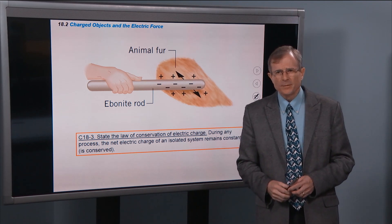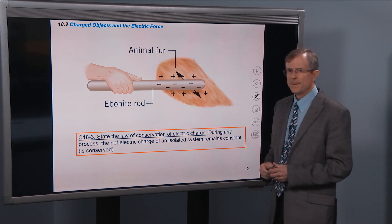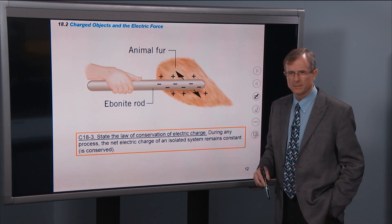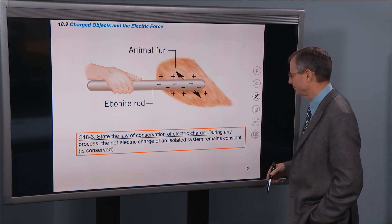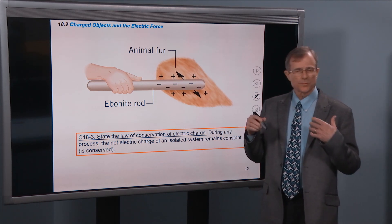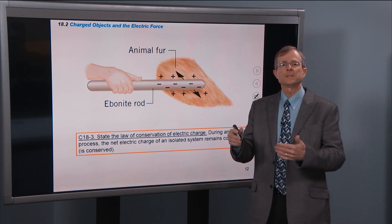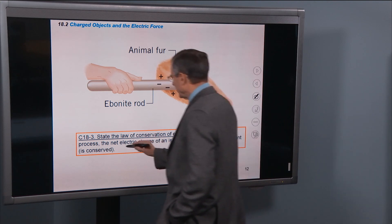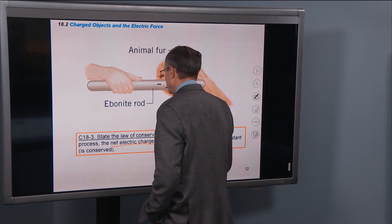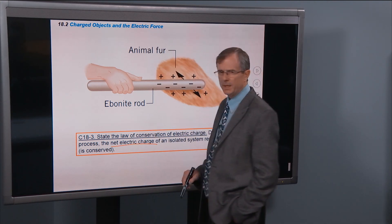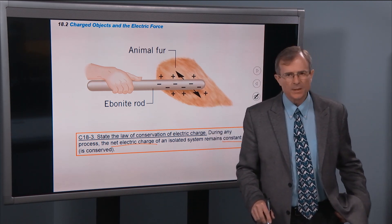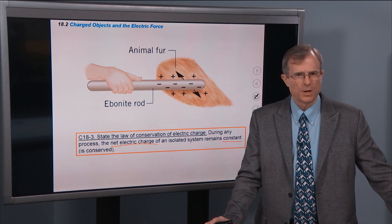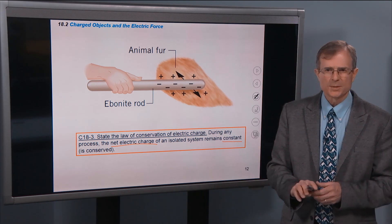So conservation of electric charge, during any process, the net electric charge of an isolated system remains constant. And physicists refer to anything that remains constant as that object being conserved. So this is the net electric charge that's going to stay constant through any process. As far as I know, there have been no exceptions to the law of conservation of electric charge. It's a very well-established law.